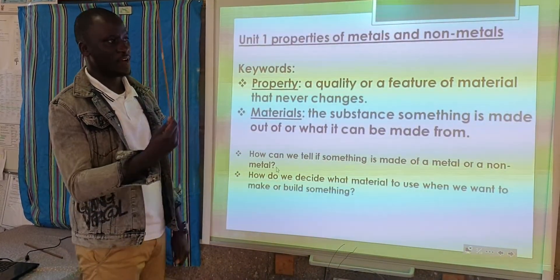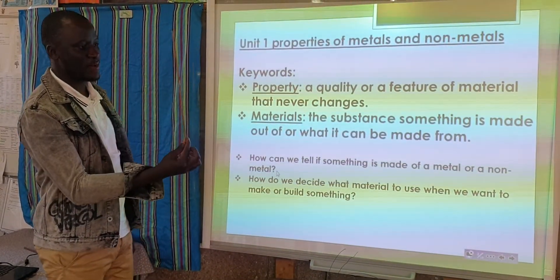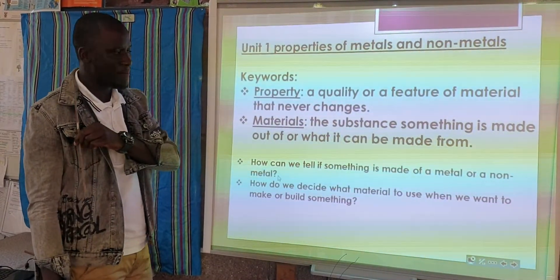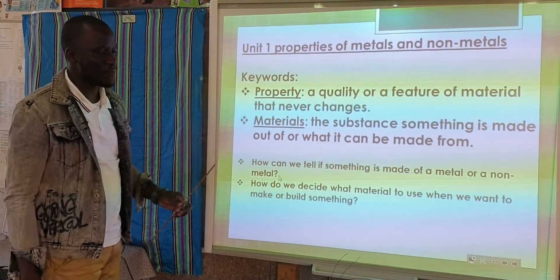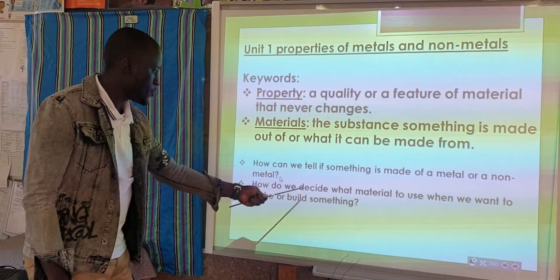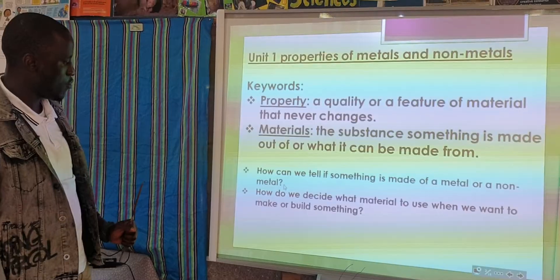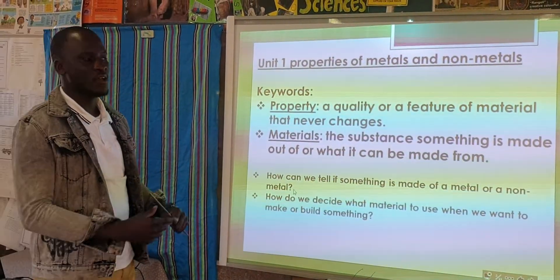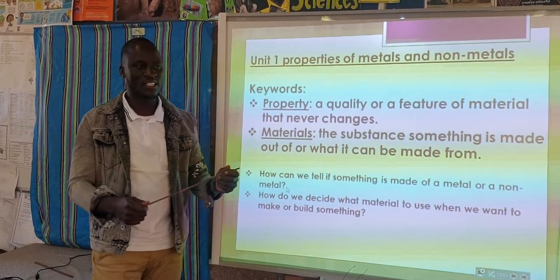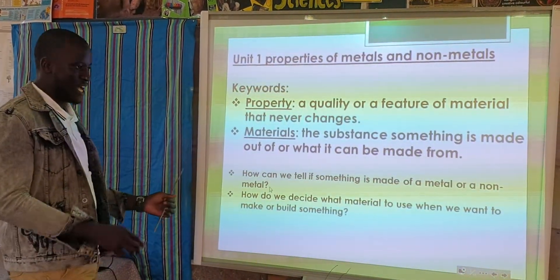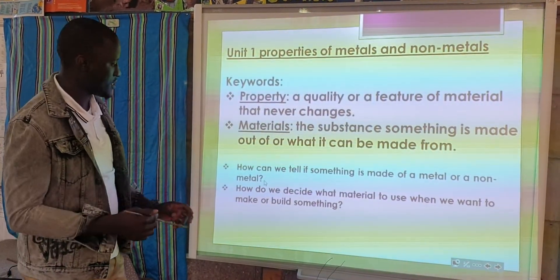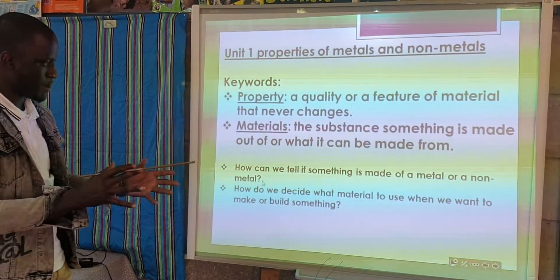These properties stay forever — they can never change. The same property that this stick has, it will have it for years to come. It will never change. So how do we decide what material to use when we want to make or build something? We look at properties of materials like how long-lasting the material is, its durability, and whether it can withstand any diverse kind of pressure exerted upon it.